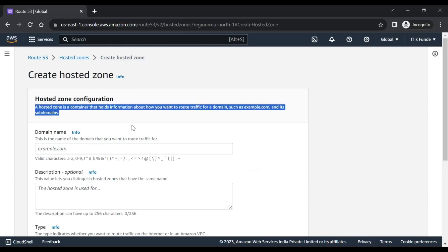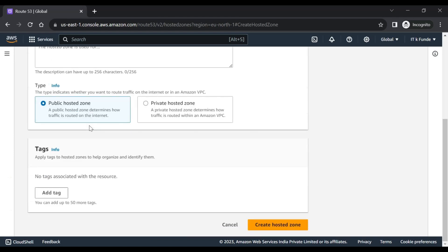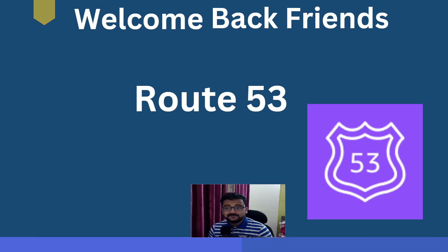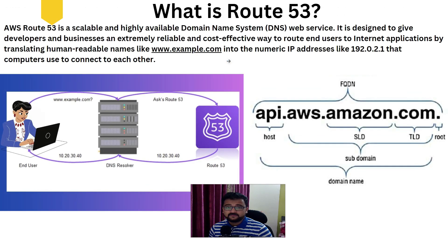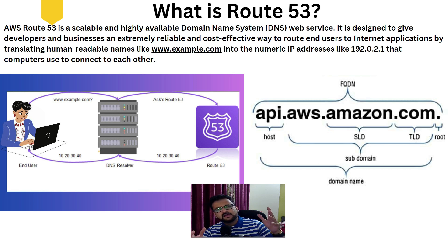A hosted zone is a container that holds information about how you want to route traffic within that particular domain, such as example.com. Now let's begin with our next lecture which is about Route 53. Route 53 is a DNS service. If you have watched all the basic videos, you must be very well aware of what DNS is, but we will touch base upon it through Route 53 because it is a DNS service offered by AWS.